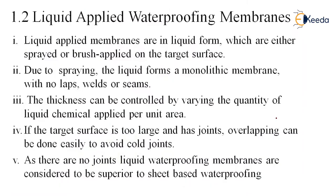The second type is the liquid applied waterproofing membrane. Here, you buy the membrane material, make it ready, and paste it with a brush or spray machine. The liquid applied membranes are in liquid form which are either sprayed or brush applied. Due to spraying, the liquid forms a monolithic membrane with no lapses, welds, or seams. Unlike sheet-based membranes where joining is present, here there is no issue of joining — a complete single uniform film is formed.